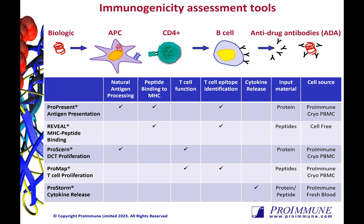These unwanted immune responses can occur via a T-cell-dependent mechanism as shown here, where the therapeutic gets taken up by an APC, processed, and presented via an MHC class 2 molecule to a helper CD4 T-cell. The activated CD4s can then interact with their cognate B-cells, resulting in the proliferation of plasma cells and the release of ADA.